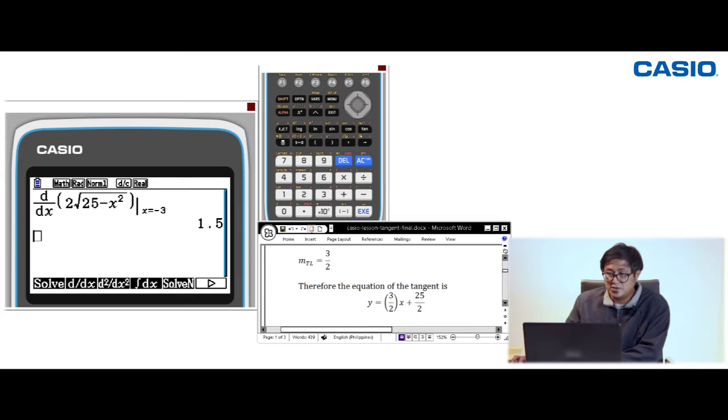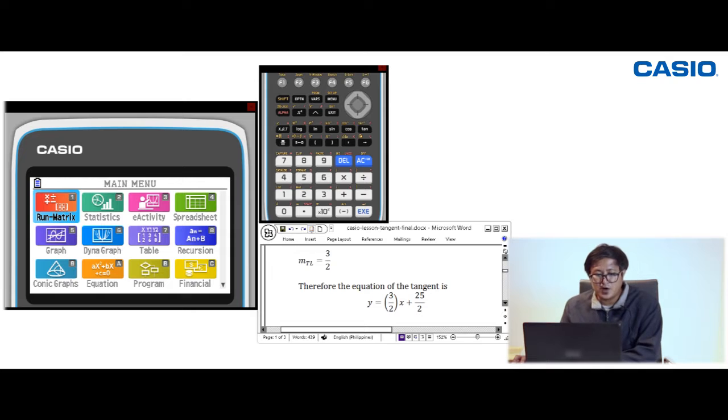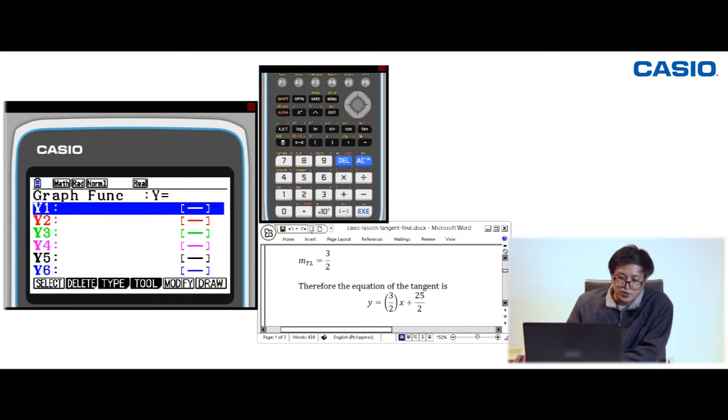This is a graphic utility, so we can actually graph the given function and the tangent line to see if they are really tangent. Press Menu. The primary function of the graphic calculator is Graph mode, number 5. Press EXE to get to the mode.